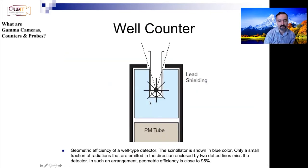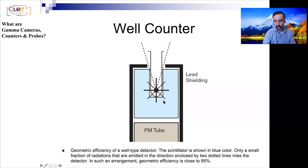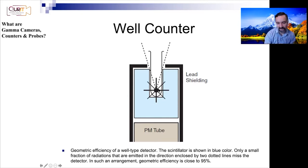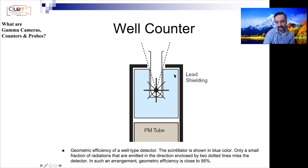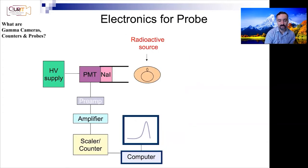Carlos will in a future lecture talk about well counters for in vitro detection. Essentially, it's a scintillator with a hole dug in it to give very high sensitivity and coverage — almost like a 4π coverage of the source — so you can get very high sensitive detection of the source. The essence is very similar: you've got a scintillator followed by a PMT and then downstream processing.